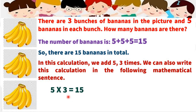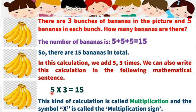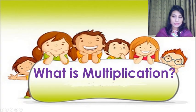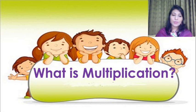So my dear students, I think you can guess what is the name of this process. Yes, the process name is multiplication. Today I will take your review class on multiplication, and this symbol is called the multiplication sign. What is multiplication? Yes, repeated addition is called multiplication. We can say if we add the same number repeatedly a certain number of times, that is called multiplication.